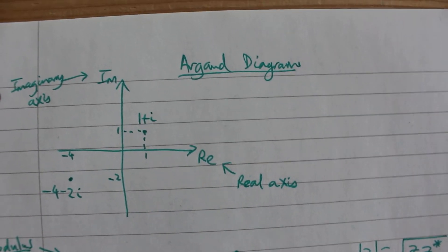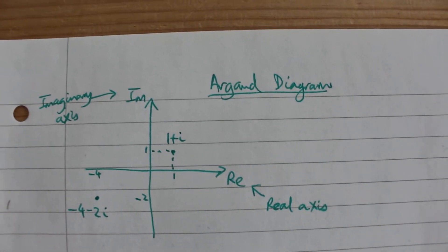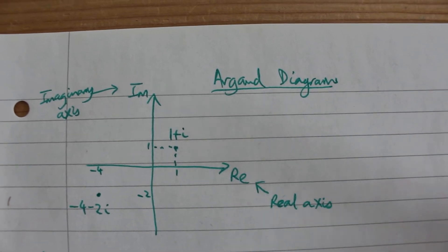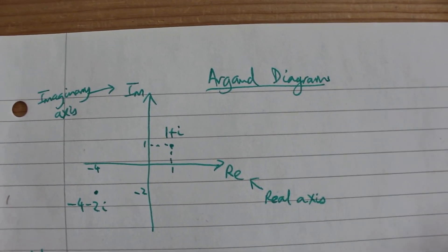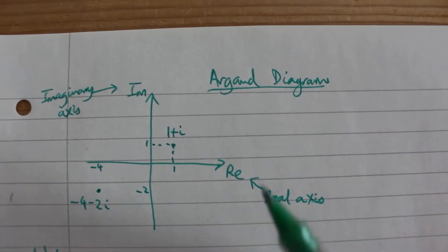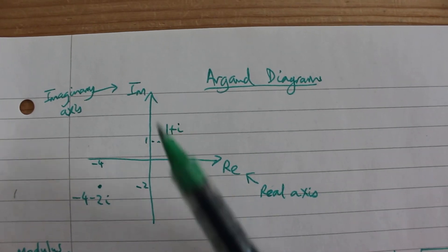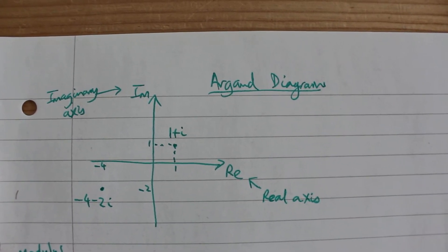If we draw a diagram like this which we think of as being the same as the plane, but instead of having an x-axis and a y-axis we instead have a real axis horizontally and an imaginary axis vertically, then we can plot complex numbers.